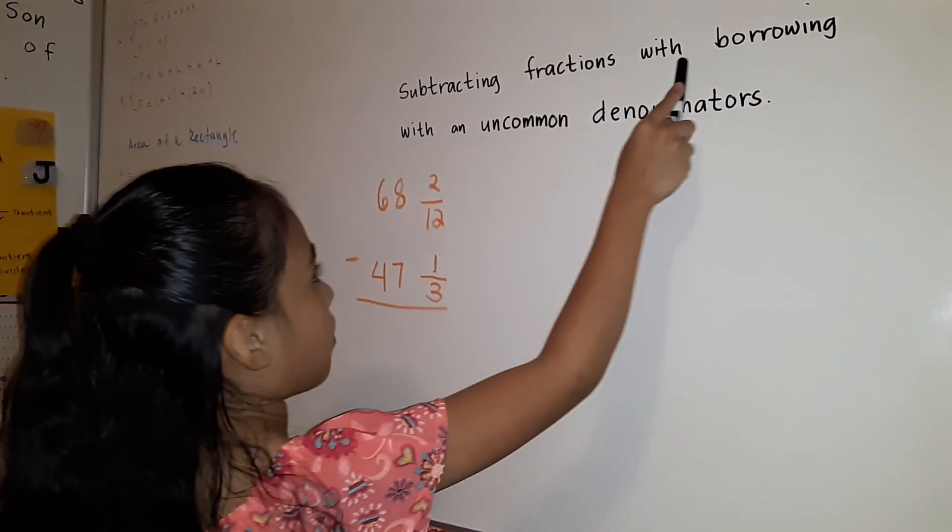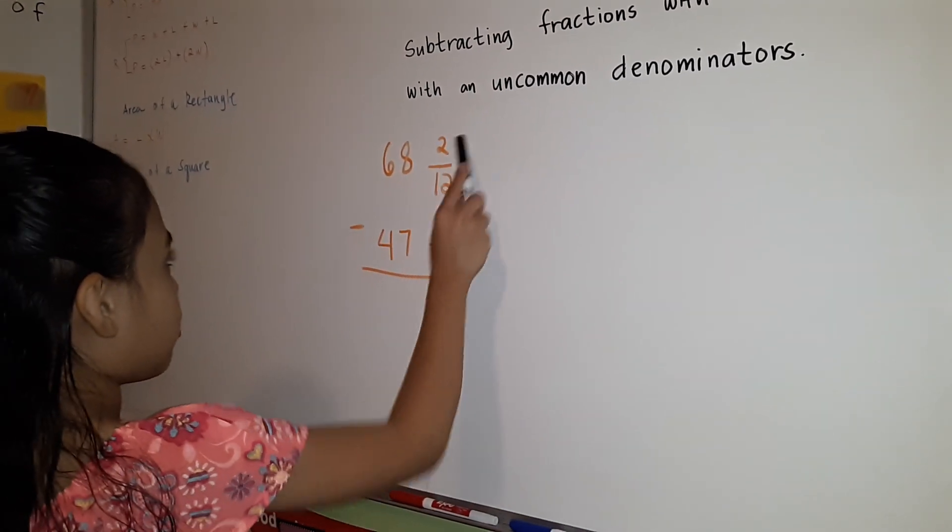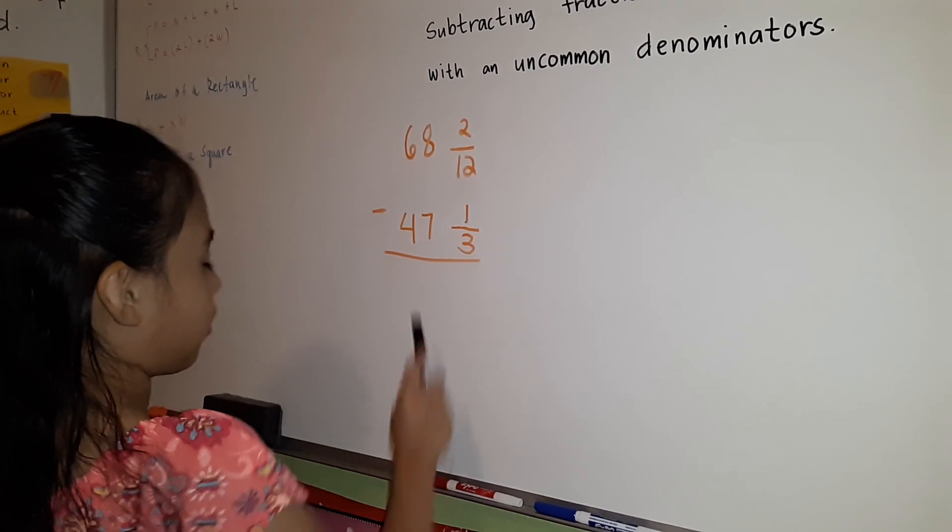Subtracting fractions with borrowing with uncommon denominators. 68 and 2/12 minus 47 and 1/3 equals.